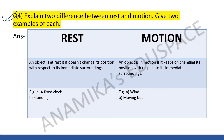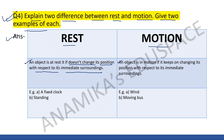Question number four: explain two differences between rest and motion, and give two examples of each. An object is at rest if it does not change its position with respect to its immediate surroundings. An object is in motion if it keeps on changing its position with respect to its immediate surroundings. Examples of rest: a fixed clock, a person standing. Examples of motion: wind, a moving bus.